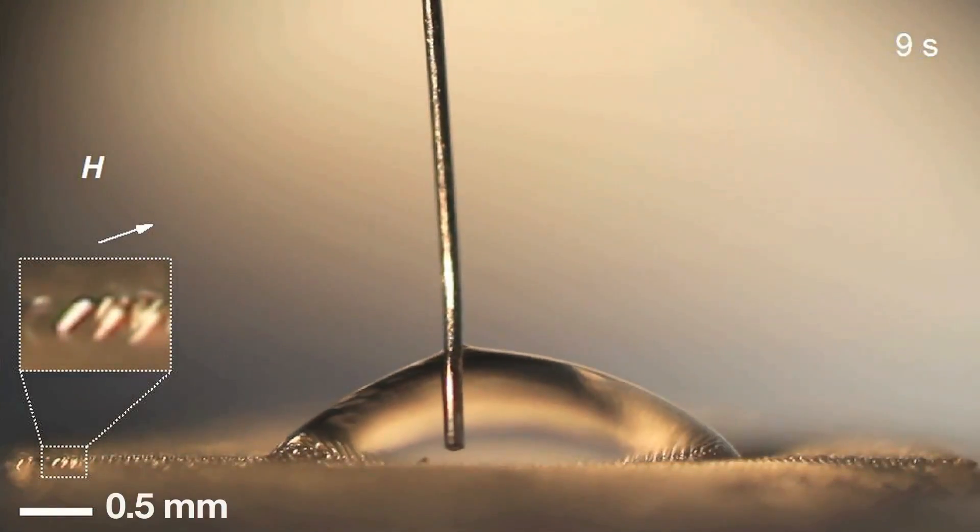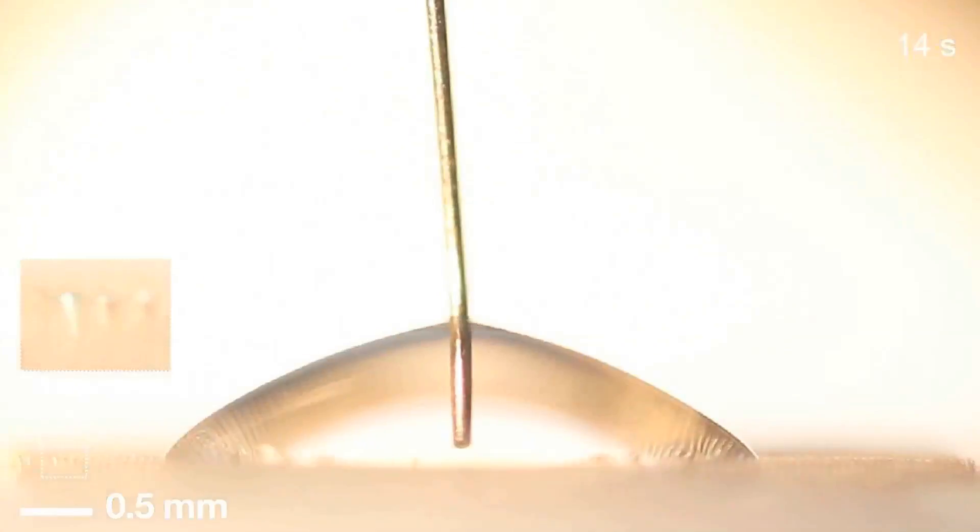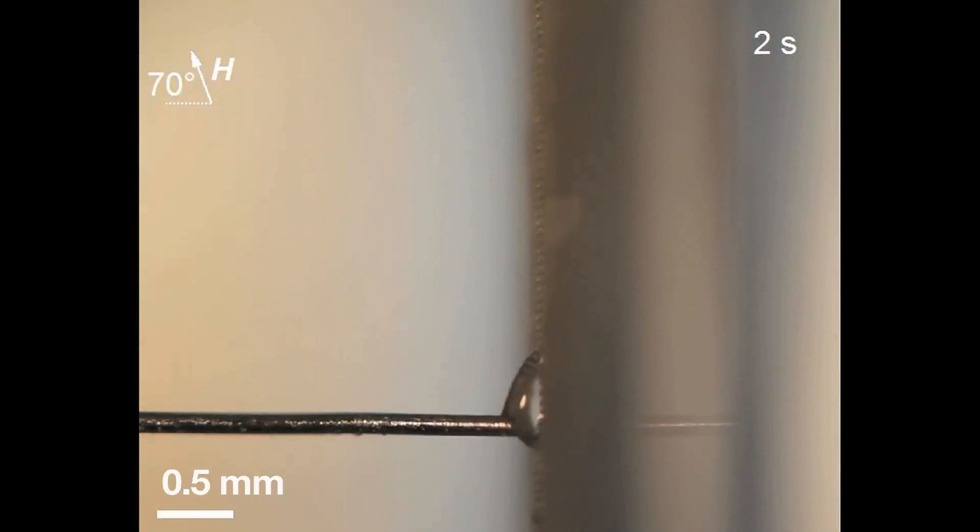When the magnetic field switches direction, the fluid instantaneously changes direction following the orientation of the field. Even on a vertically inclined surface, fluid can be tuned to climb against gravity.